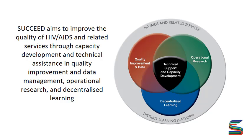We normally start with this diagram of Succeed to try and explain it. What Succeed does basically is to provide technical support and capacity development, and we do this through three activities which work together as one intervention — hence the overlap. So we have quality improvement and data, operational research, and decentralized learning. You will hear more about those activities from the upcoming speakers.